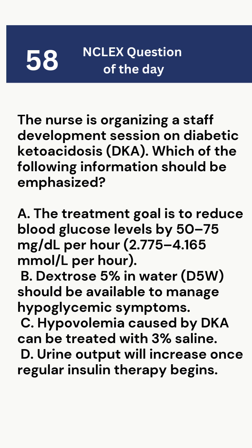A. The treatment goal is to reduce blood glucose levels by 50 to 75 mg per deciliter per hour, 2.775 to 4.165 millimoles per litre per hour. B. Dextrose 5% in water, D5W, should be available to manage hypoglycemic symptoms.